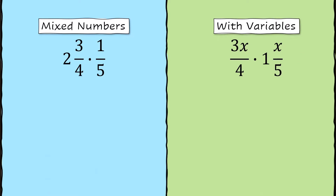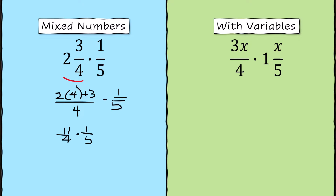Let's cover mixed numbers, because you might have forgotten how to change them into improper fractions. An improper fraction is where the numerator is bigger than the denominator. If you have 2 and 3 fourths and need to multiply that times 1 fifth, you need to convert 2 and 3 fourths into an actual fraction. The way you do that is multiply 2 times 4, then add the 3 — sometimes called the checkmark method. So the numerator is 2 times 4 plus 3, over 4, giving 11 over 4. Then 11 over 4 times 1 fifth gives an answer of 11 over 20.